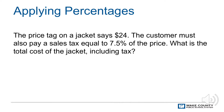For example, the price tag on a jacket says $24. The customer must pay sales tax equal to 7.5% of the price. What is the total cost of the jacket including tax? The customer will pay 107.5% of the price listed on the tag, which is $25.80.